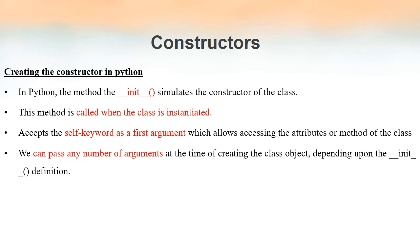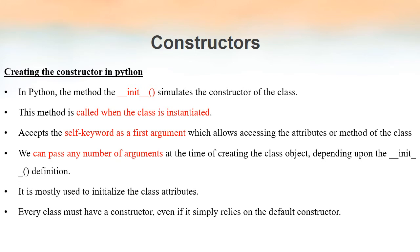We can also pass any number of arguments when we create an object, but it depends upon the definition of the `__init__` method. It is mostly used to initialize the class attributes. Every class will have a constructor — either the programmer writes their own constructor, or the program will depend on the default constructor provided by Python. At any cost, there will always be a constructor for a class.